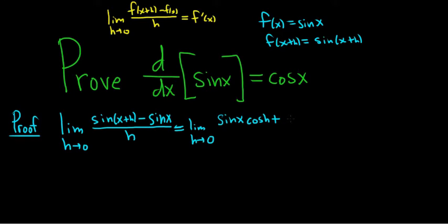plus cosine x sine h. It's one of those trig identities. Then we have minus sine x. That's all being divided by h. So now we have to figure out a clever way to rewrite this limit.